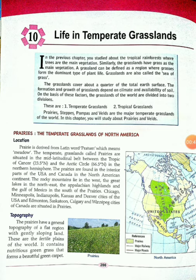The temperate grasslands called prairies are situated in the mid-latitudinal belt between the Tropic of Cancer and the Arctic Circle at 66.5 degrees north, in the northern hemisphere. The prairies are found in the interior part of the USA and Canada in the North American continent.